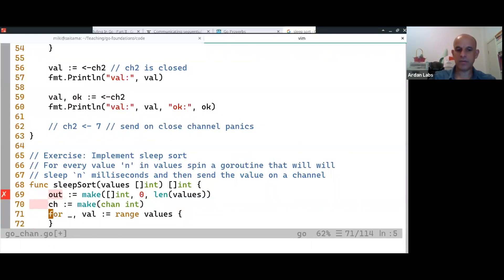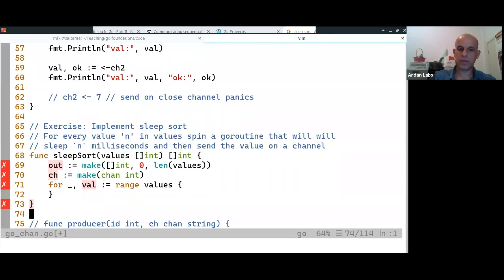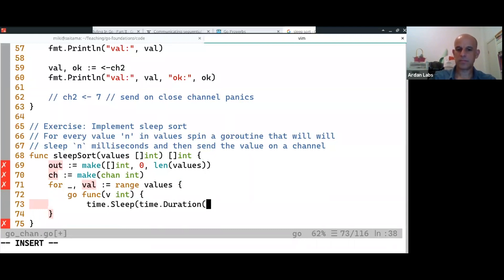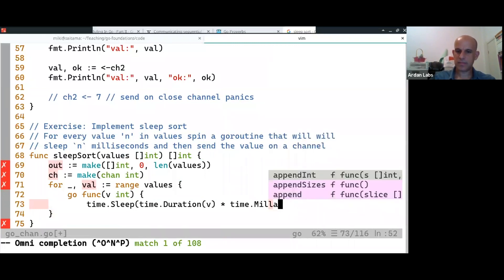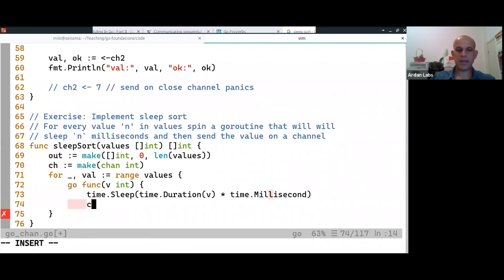And for every value, I'm going to do the goroutine. So I need to convert the integer to time.duration, time.millisecond.